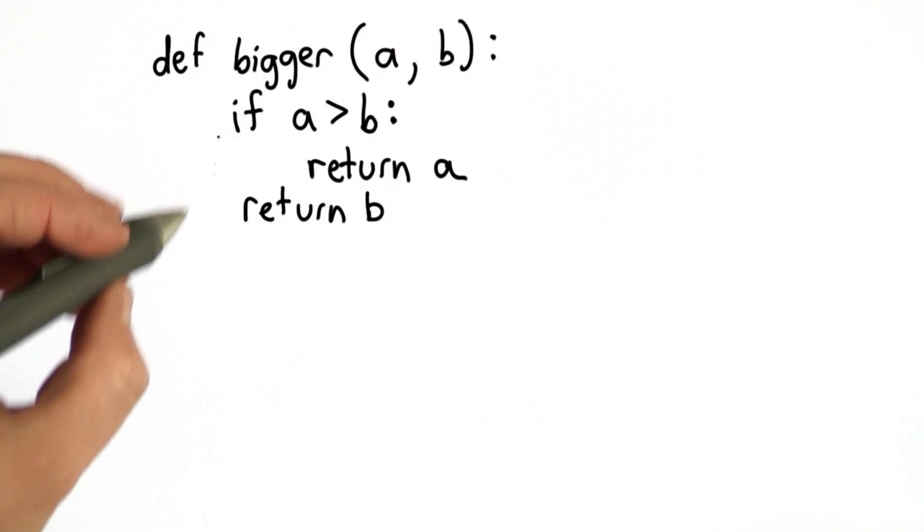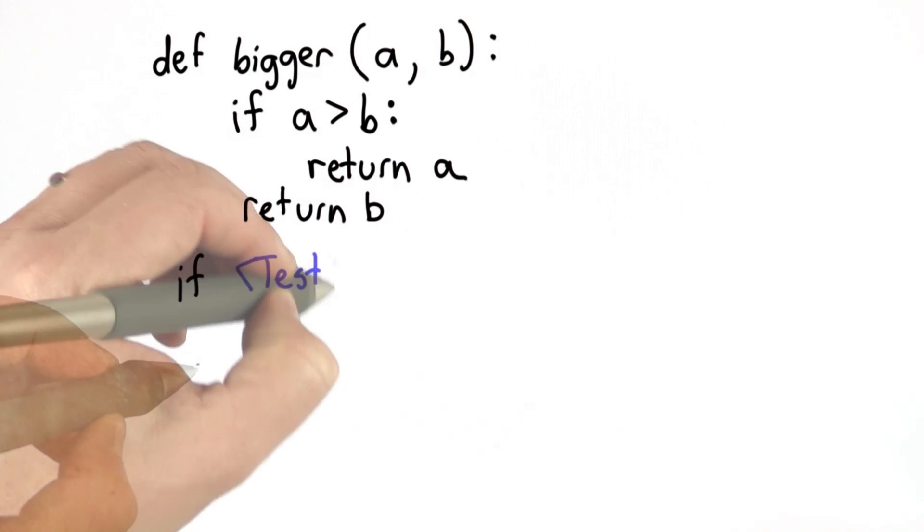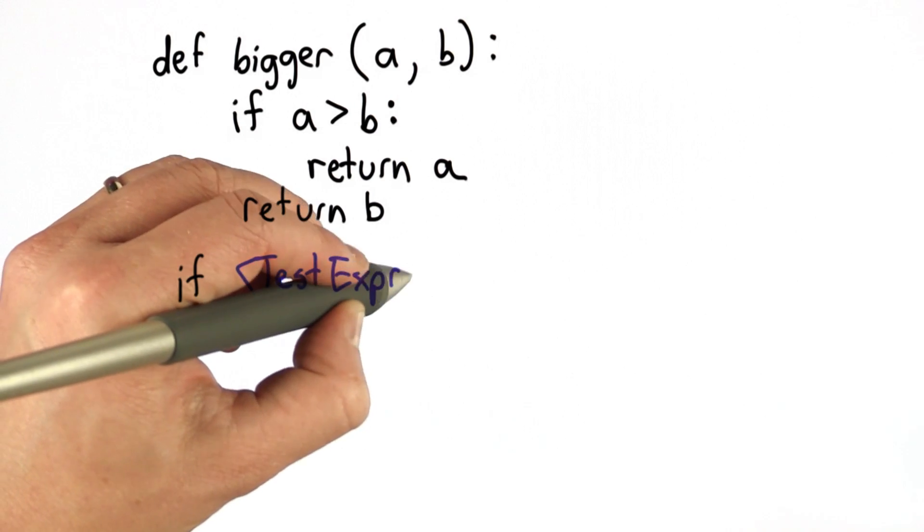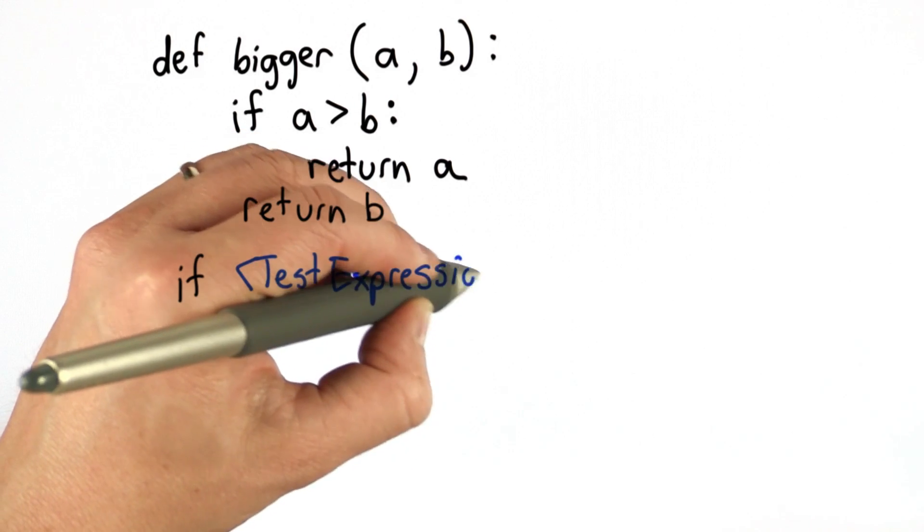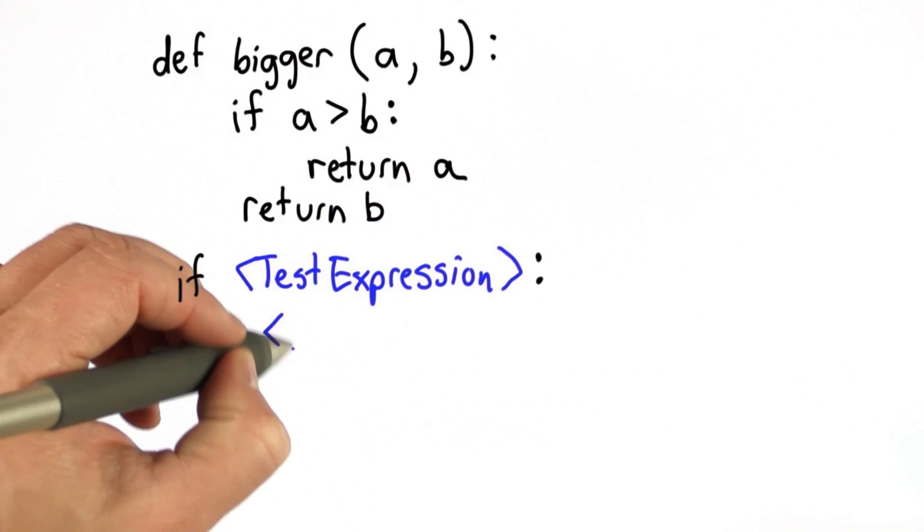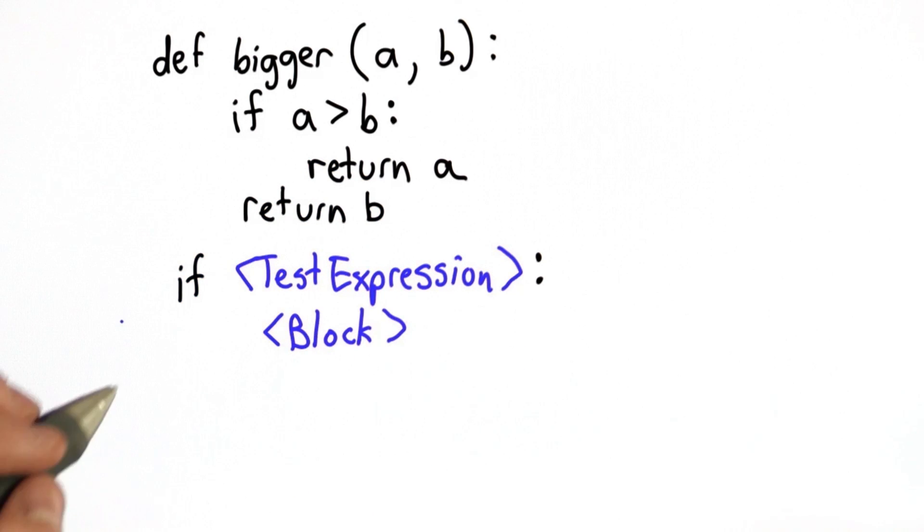So instead of just having what we had before, where we have an if, and we have a test expression, and we have a block that executes when the test expression is true, what we want to do is have something that executes when the test expression is false.